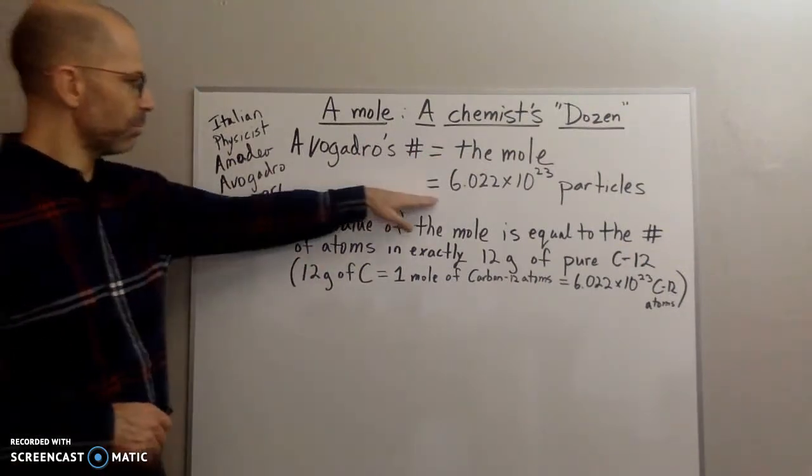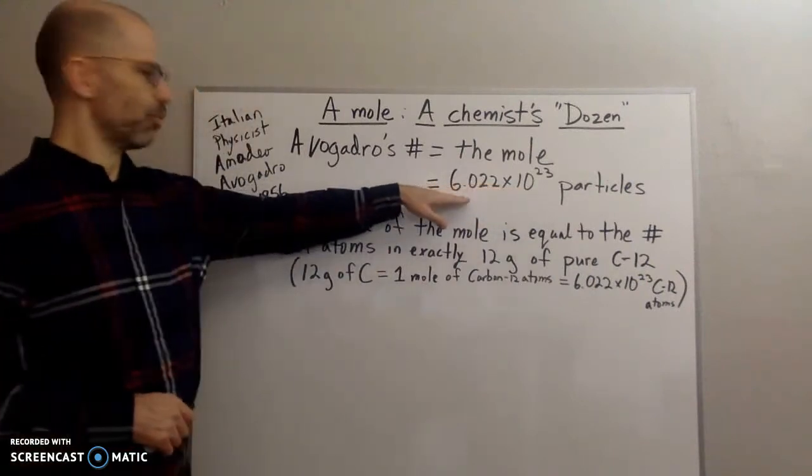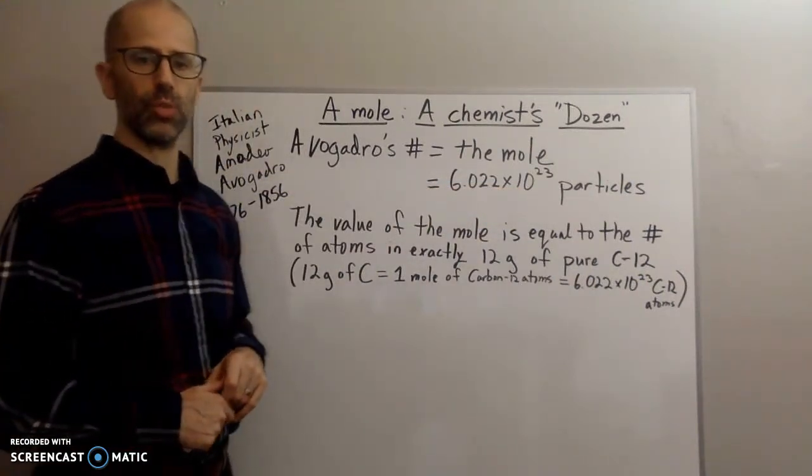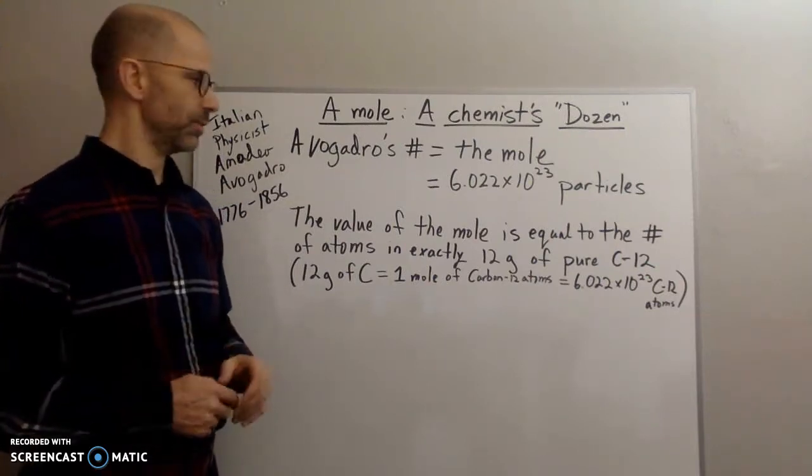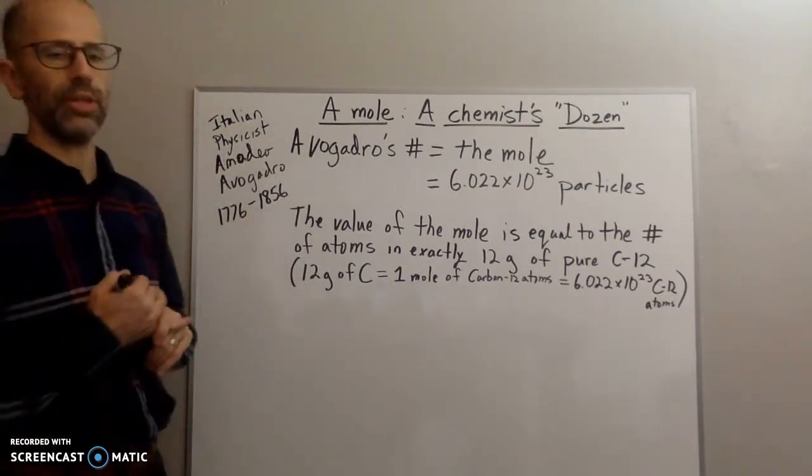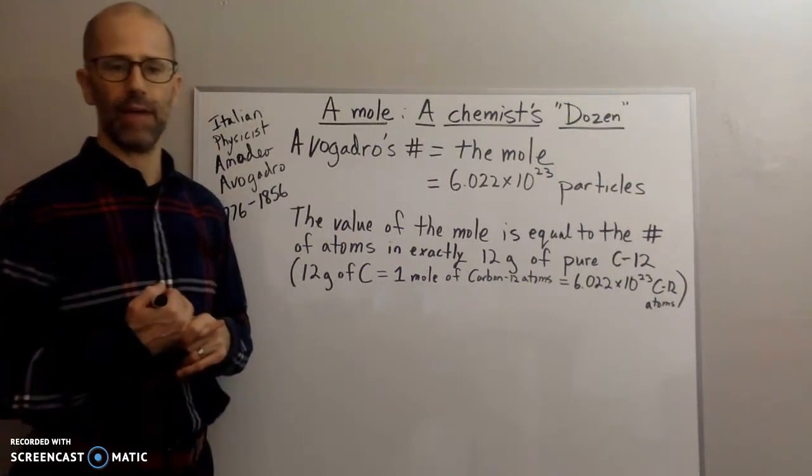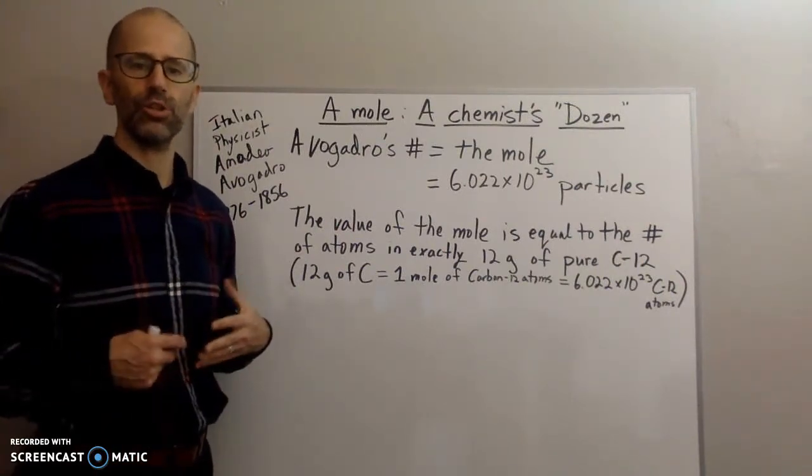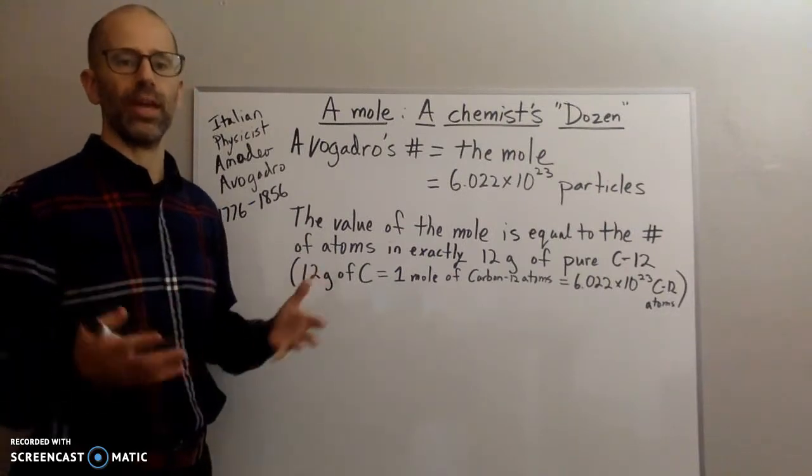It's referred to as Avogadro's number and that particular number is called the mole. And that number, Avogadro's number, is 6.022 times 10 to the 23rd particles. The one thing you want to keep in mind about Avogadro's number is that this number can refer to any number of things.